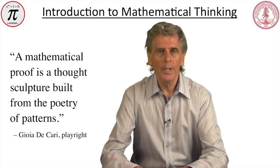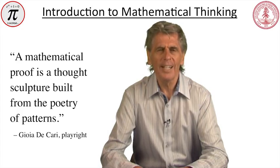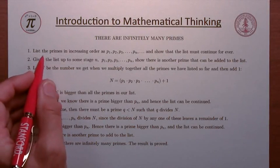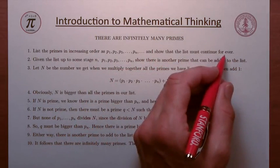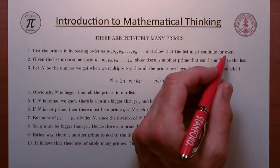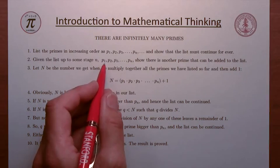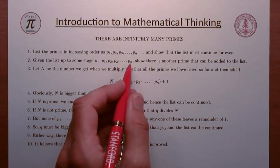Euclid's proof that there are infinitely many primes, which I gave in the first lecture, is a good example of a proof that requires an unusual insight. Let's look at it again. The idea is to show that if we list the primes in increasing order — p1 is 2, p2 is 3, p3 is 5, and so on, all the way to some stage p_n — then the list can be continued forever.